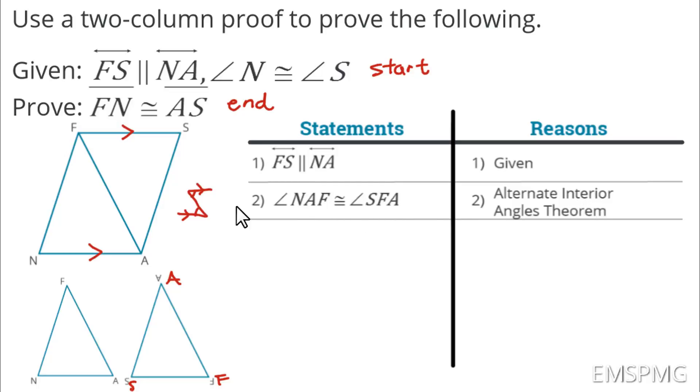For step number three, I have another piece of given information. Let's go ahead and mark that in the diagram. Angle N is congruent to angle S. And I had already forgotten, I'll put two there. I forgot to put step number two in. So, I already know that A is congruent to F. All right. So, now I'm putting N congruent to S. That's step number three. And, again, that was just given information.